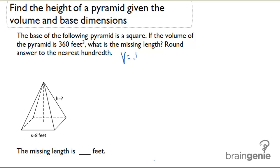We know the volume of a pyramid is one-third times capital B times H, where the big B stands for the base area.